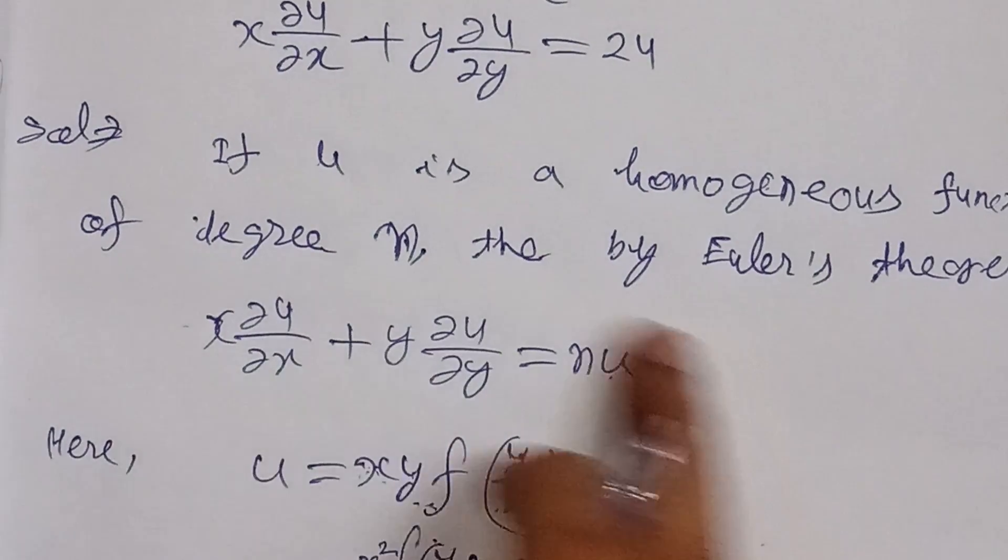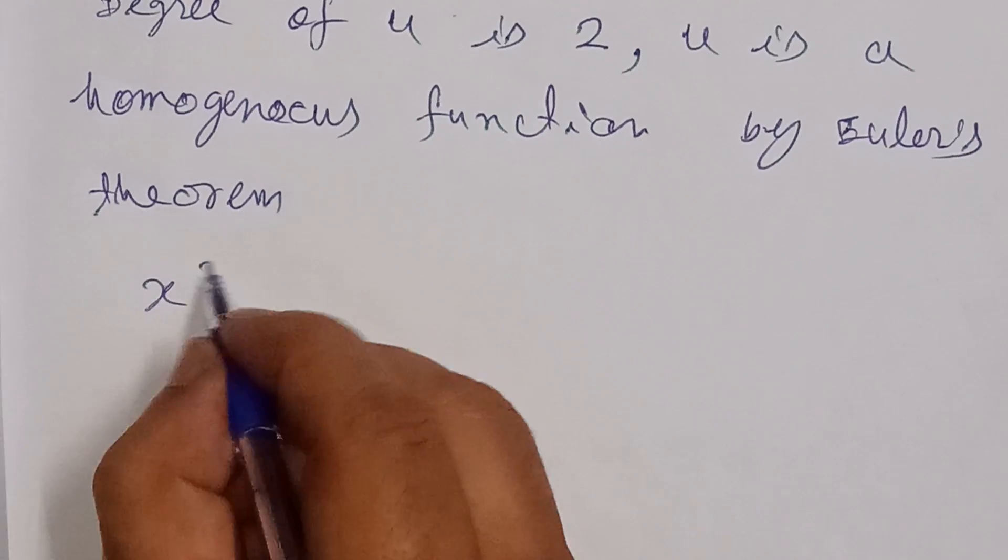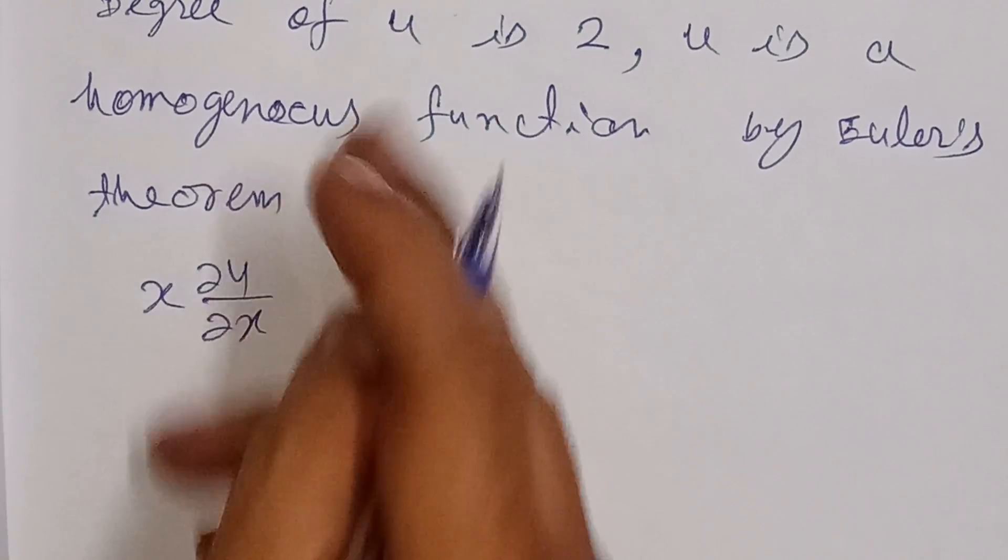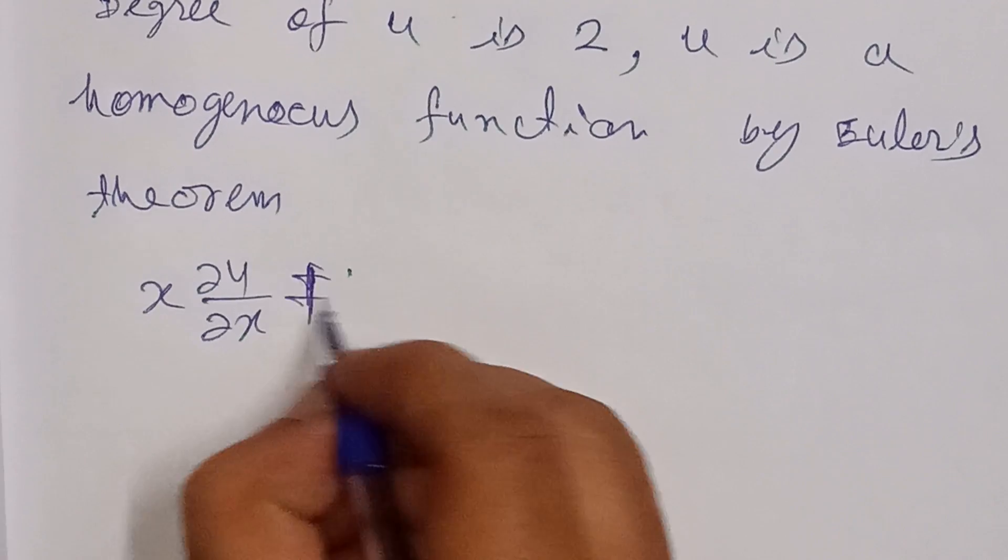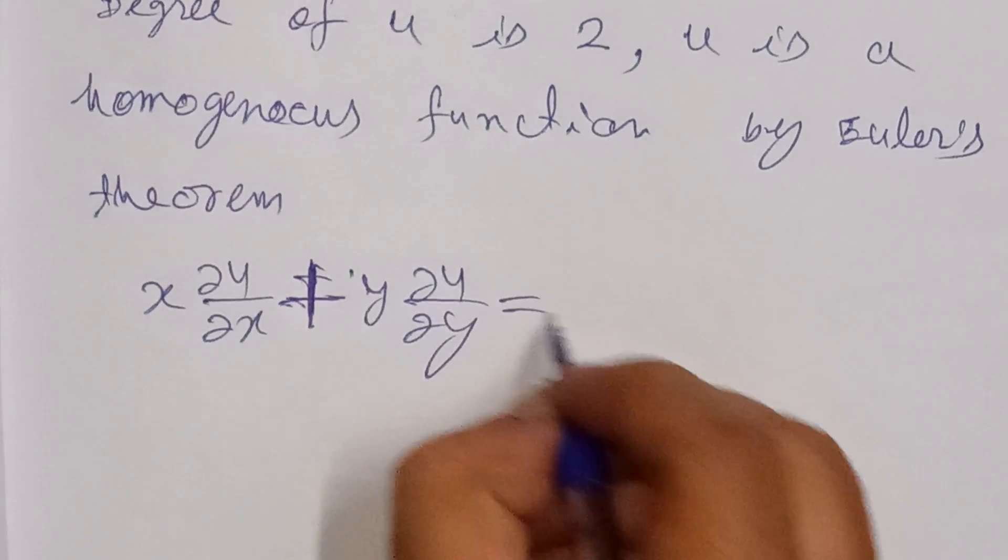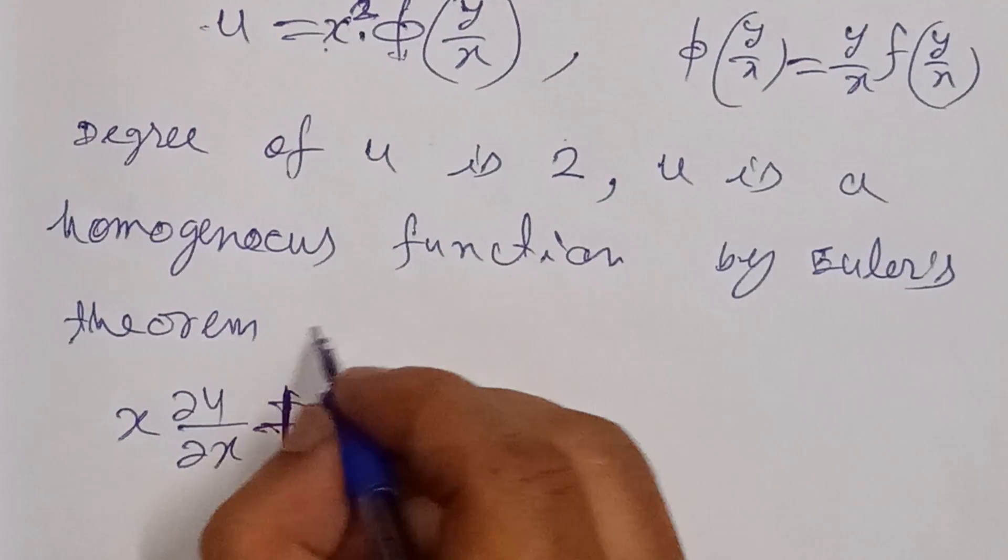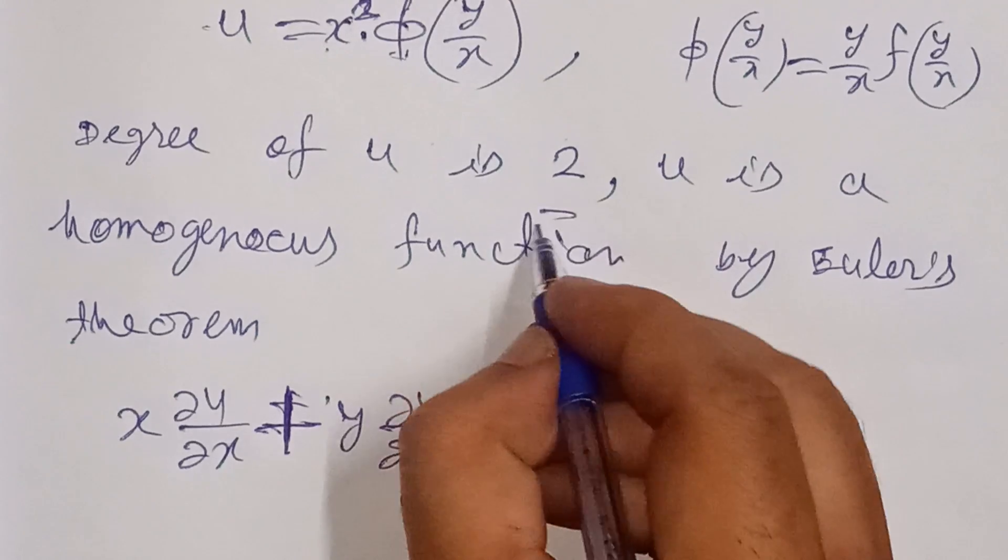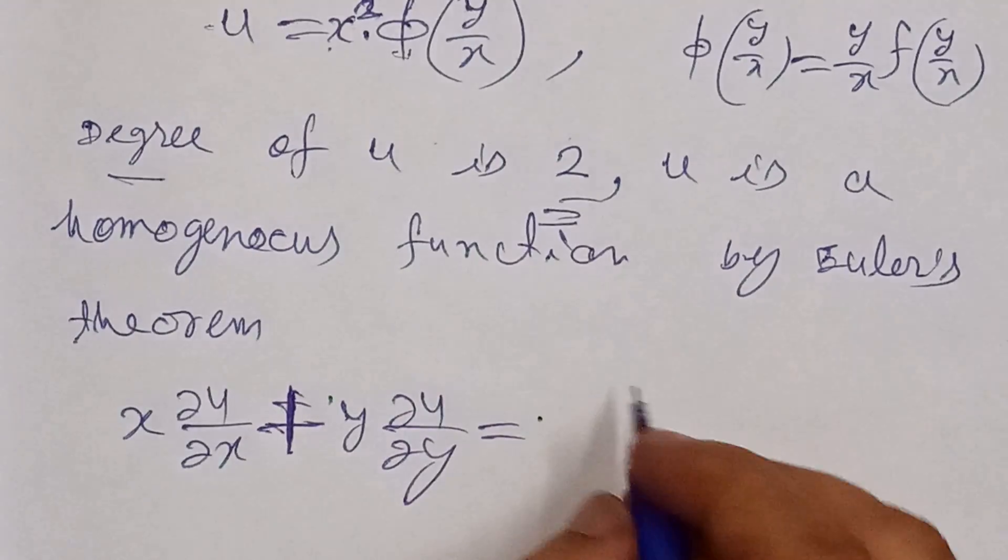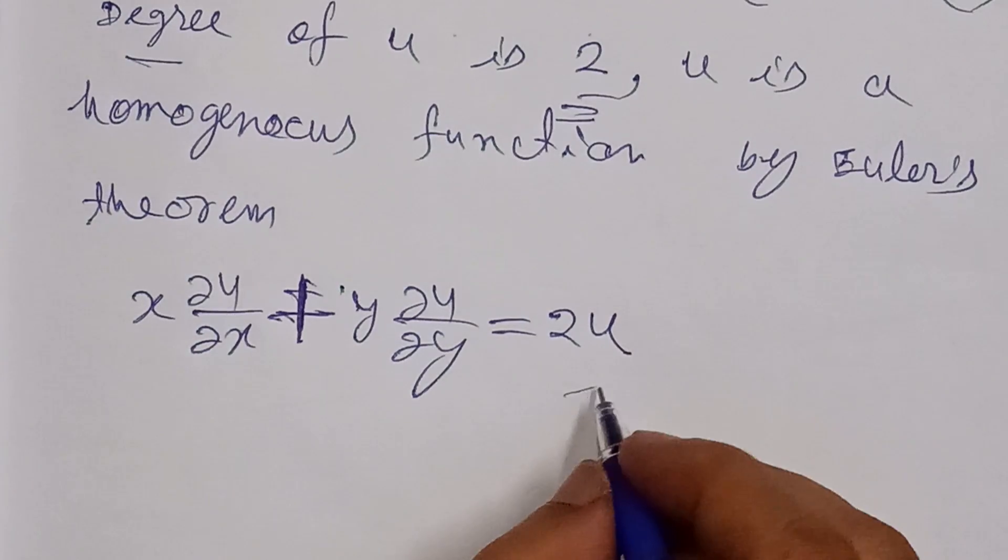So we apply the formula here. X del u upon del x plus y del u over del y equals nu. The value of n here is 2, so it becomes 2u, and we will prove this.